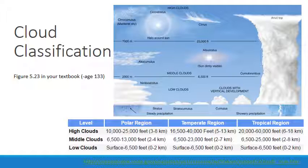The third type — stratus or stratiform clouds — basically appear as sheets or layers that cover much or all of the sky. All the clouds we talk about will have at least one of those three basic forms, and some are a combination of two of them. For example, stratocumulus clouds are mostly sheet-like structures composed of long parallel rolls or broken globular patches.